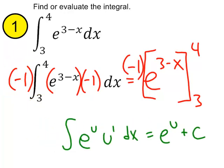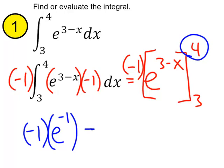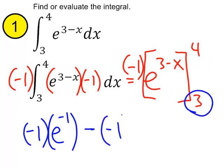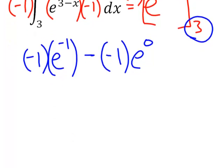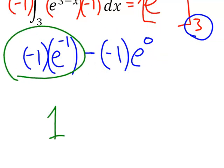Let's plug in. If we plug in 4, we get negative 1 times e to the 3 minus 4 power, which is e to the negative 1. Minus, if we plug in 3, we get negative 1 times e to the 3 minus 3, which is e to the 0 power. Simplifying: minus negative 1 times e to the 0 — e to the 0 is just 1 — so we get 1. And then minus e to the negative 1, which is the same as minus 1 over e.